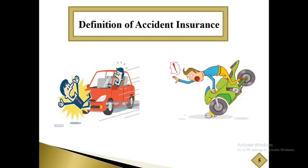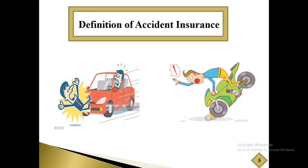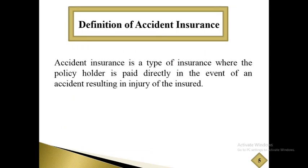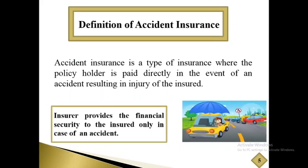Life is truly unpredictable. One moment you may be living it up and the next moment you may meet with an accident. Unfortunately, accidents don't give you prior warnings, and that's why accident insurance is here to help you. Accident insurance is a type of insurance where the policyholder is paid directly in the event of an accident resulting in injury of the insured. The insurer provides financial security to the insured only in case of an accident.